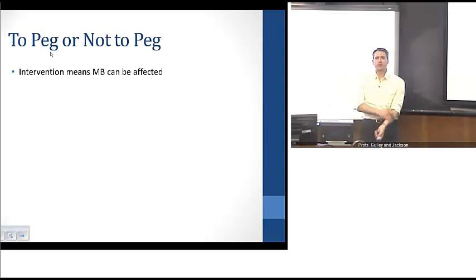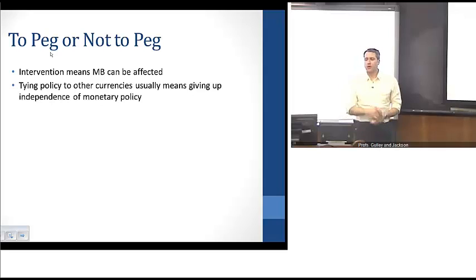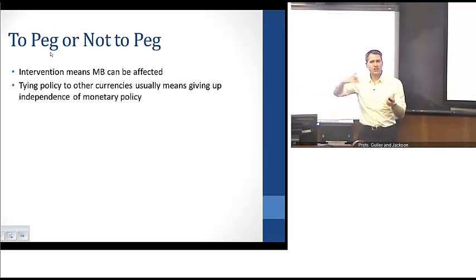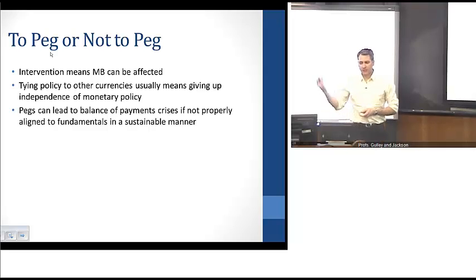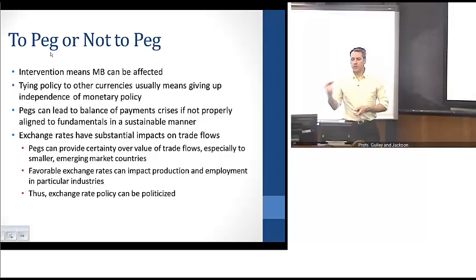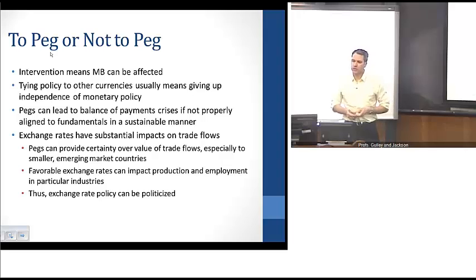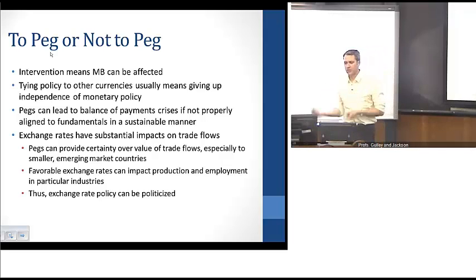So ultimately, the question is: should we peg or should we not peg as a country? On the one hand, intervention means the monetary base can be affected. If we tie policy to another currency, that usually means giving up independence of monetary policy to address domestic shocks. Pegs can lead to balance of payments crises if not properly aligned to fundamentals. But exchange rates can have substantial impacts on trade flows, providing certainty over the value of those flows — particularly important for emerging market or smaller countries — and can provide favorable exchange rate terms impacting production and employment. For these reasons, exchange rate policy can be highly politicized.